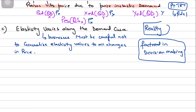Another limitation of elasticity is that firms must be careful of the fact that elasticity varies along the demand curve. We've already seen in previous videos how, for a linear downward sloping demand curve, the elasticity varies along it. It's elastic at the start, then as you go downwards it becomes unitary elastic towards the midway of the demand curve, and then as prices go down further the elasticity declines further and it becomes inelastic. A business must be careful not to generalize elasticity values to all changes in prices.